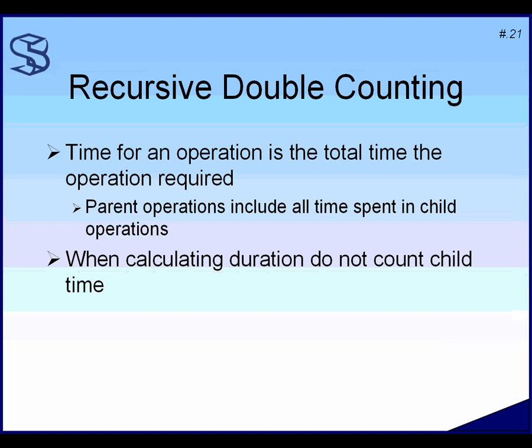Watch out for recursive double-counting when building your own profiler. If you're summing elapsed time and CPU time, the times of children are rolled up into the parent. So if a parse took 104 microseconds of elapsed time and you also add the elapsed time of all its children, you're double-counting. Any child time is automatically included in the parent, so know the parent-child relationships of your cursors.